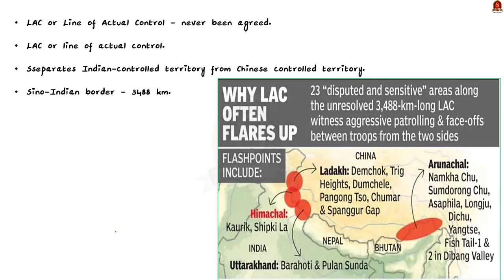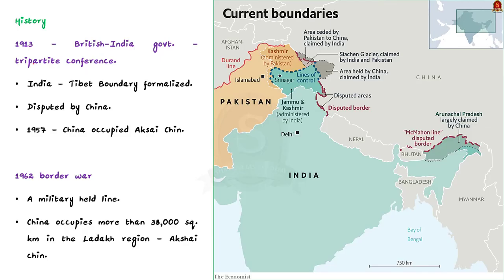In contrast, the alignment of the Line of Actual Control has never been agreed upon and has neither been delineated nor demarcated — there is no official map in the public domain depicting it. The LAC can best be thought of as an idea reflecting territories currently under the control of each side pending resolution of the boundary dispute. LAC is the demarcation separating India-controlled territory from China-controlled territory in the Kashmir region. The length of the Sino-Indian border is 3,488 kilometers, covering the western sector including Ladakh, the middle sector including Himachal Pradesh and Uttarakhand, and the McMahon Line in the east covering Sikkim and Arunachal Pradesh.